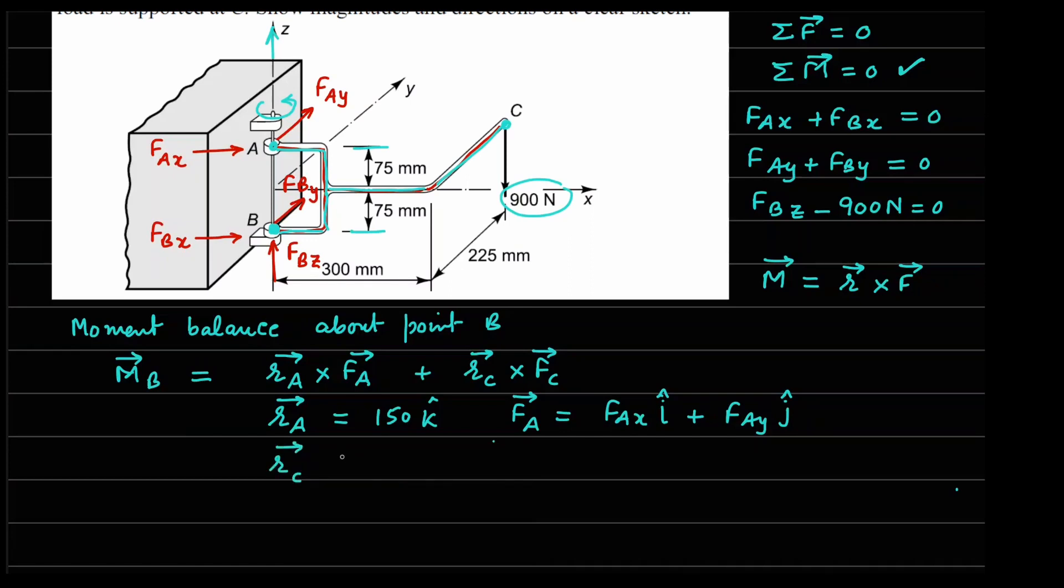Similarly, I can write RC vector. So how do I reach point C if I start from point B? For that purpose, I will be moving by this 300 mm in the X direction, which is right here. So I can write 300 i cap. In the Y direction, I will be moving by this distance, which is 225 mm in the Y direction. That is why j cap. And in the Z direction, I will be moving only one of these 75 mm. That is why 75 mm K cap. Now the force at point C is only one force, which is acting downwards in the Z direction. So we have minus 900 newtons and the direction is K cap.